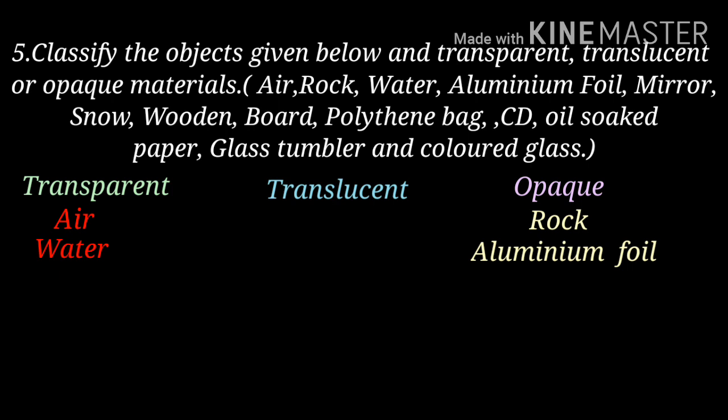Aluminium foil is opaque. Mirror — it is a transparent one. Through a mirror we can see, so it comes under transparent material. Next: snow — we can see a blurred image on the opposite side, so it comes under translucent.